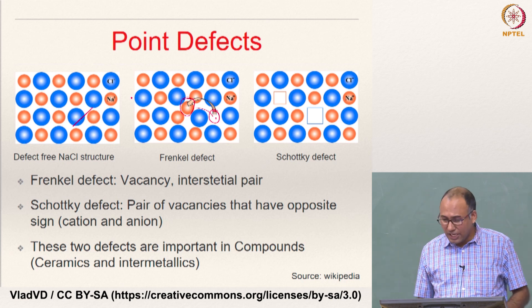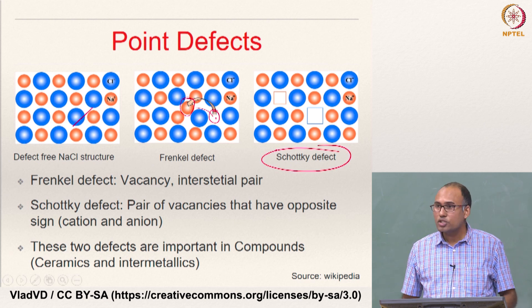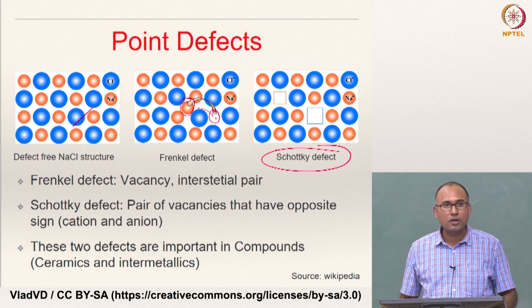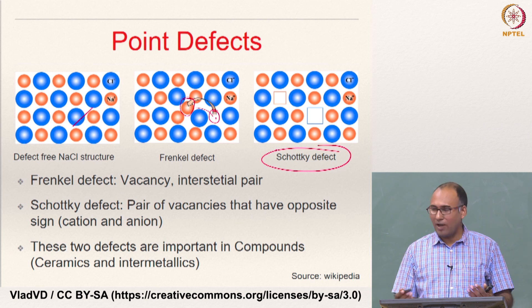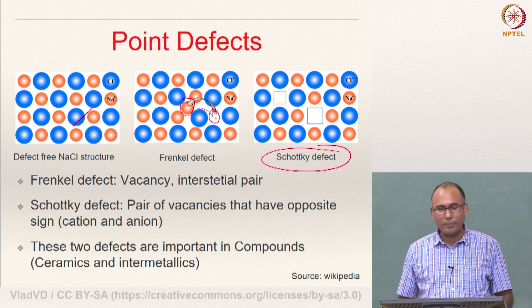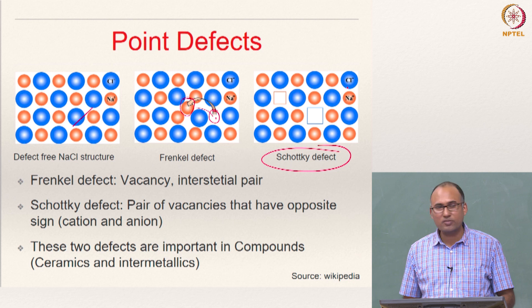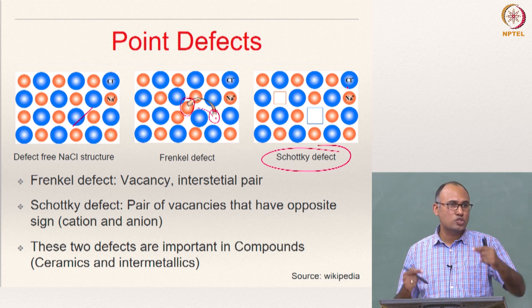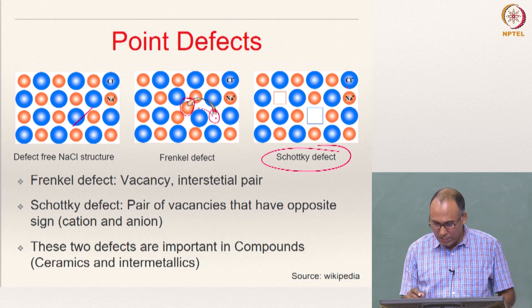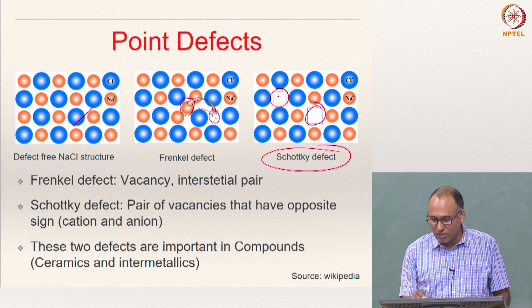And there is another kind of defect which is called Schottky defect. What is the Schottky defect? Schottky defect is a pair of vacancies that have opposite signs. That means, you have both elements Na, sodium and chlorine. One is positively charged and one is negatively charged and you need to have vacancies of these two guys together. So here what should have been there? Sodium should have been there. Here chlorine should have been there. Both of them are missing.